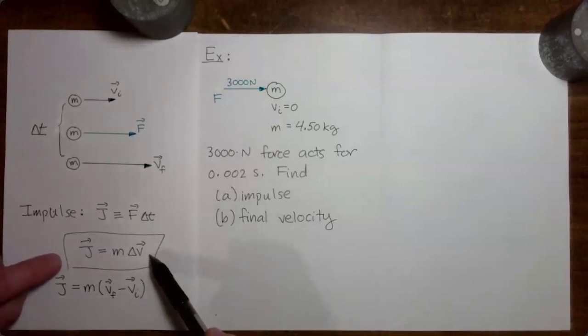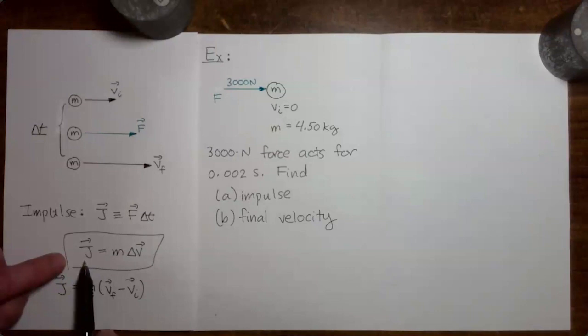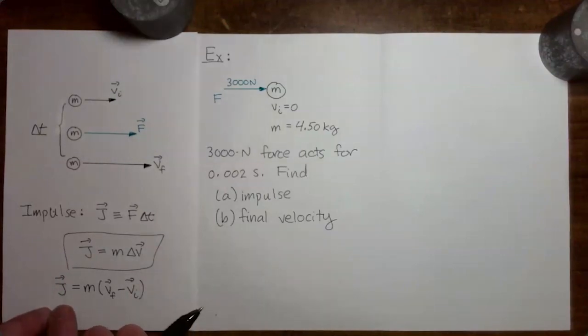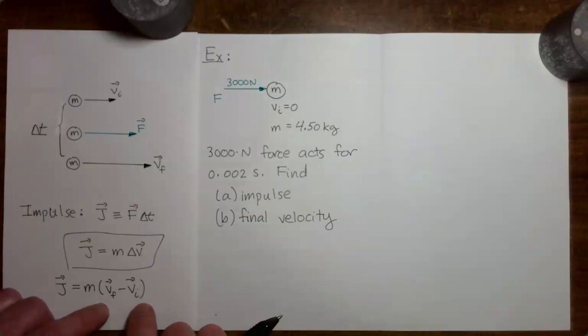We saw in the previous video that the impulse which acts on the mass turns out to be the mass multiplied by the change in the velocity of the mass. If we like, we can also say that the impulse delivered to the mass is equal to the mass times the difference between the final velocity vector and the initial velocity vector.